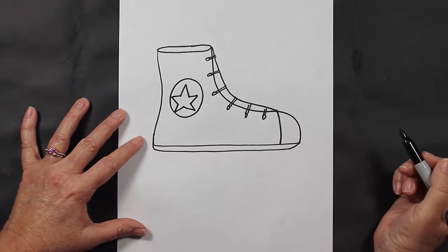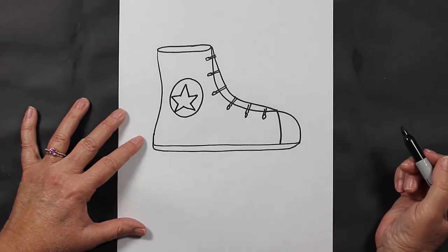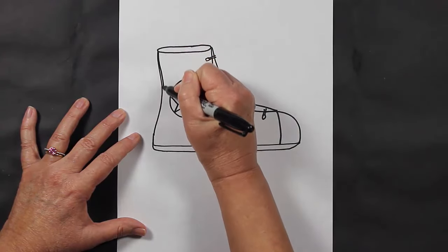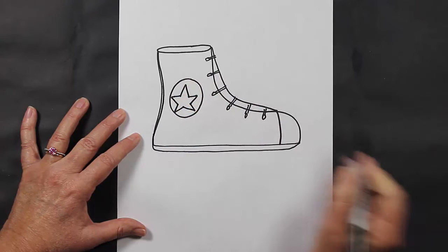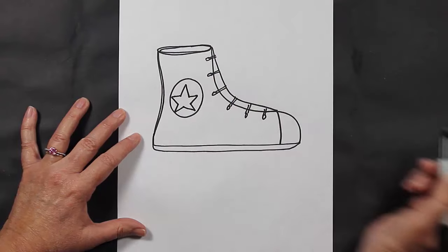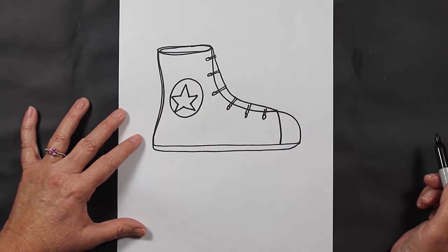All right, I think what I'm going to do is add one more line to this back part, one more line up here. So basically what I did is I just followed along the first line. There you go, there's your tennis shoe!